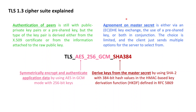Within TLS 1.3 only authenticated encryption with associated data (AEAD) ciphers are used. The first part of this TLS 1.3 cipher suite reads AES 256 GCM. This specifies the AEAD cipher — in this case the AES block cipher behind the GCM block cipher mode of operation using 256-bit AES keys. GCM as an instance of AEAD provides both confidentiality and authenticity to the application data, so we are only left to have the key derivation specified by the cipher suite.